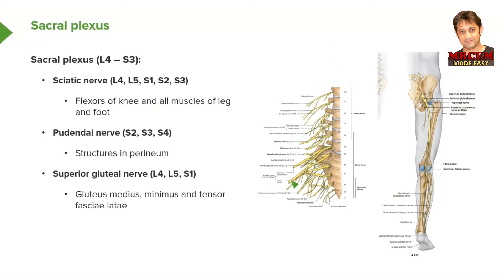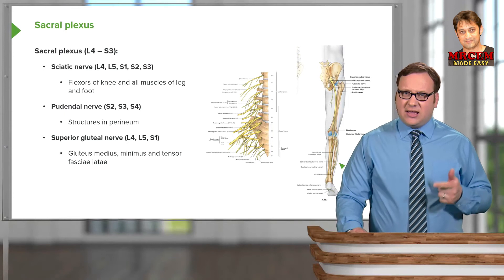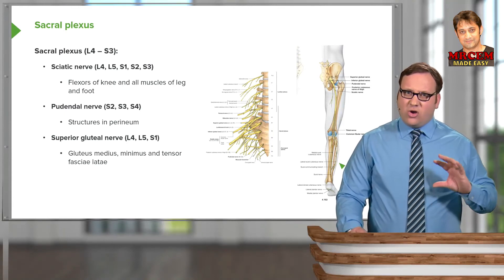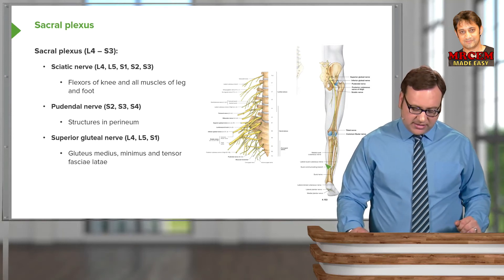The sciatic nerve has two parts to it: the common fibular nerve and the tibial nerve. Although separate, these two nerves are bound together to form the sciatic nerve. It runs down the posterior aspect of the thigh and supplies all the flexors of the knee and all the muscles of the leg and foot. Together they supply all of the musculature of the lower limb except the gluteal region, the anterior thigh, and the medial thigh. So the posterior thigh, all of the leg, and all of the foot are supplied by the sciatic nerve.